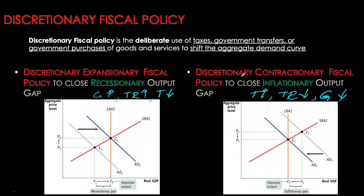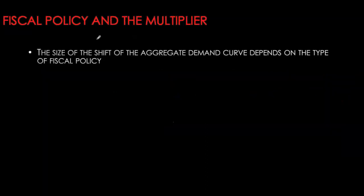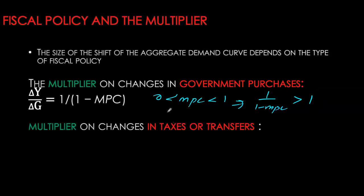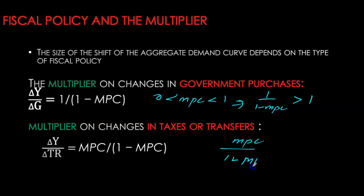Remember, these are discretionary measures — deliberate changes in any of these three. Recall our discussion of the multiplier: the size of the shift in aggregate demand depends upon which fiscal policy tool is being used. If the tool is government purchases, our fiscal policy multiplier is 1 over (1 minus MPC). If the change is coming through taxes or transfers, the multiplier is MPC over (1 minus MPC), which is always smaller than the government spending multiplier.